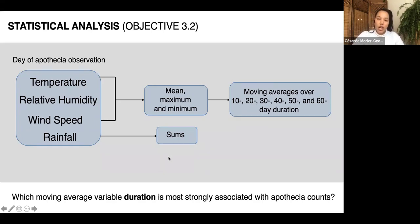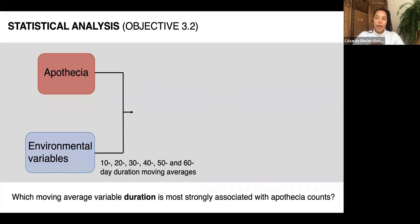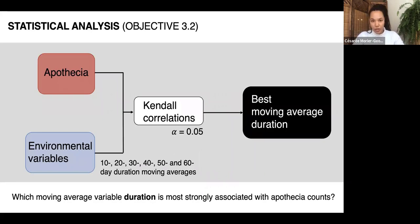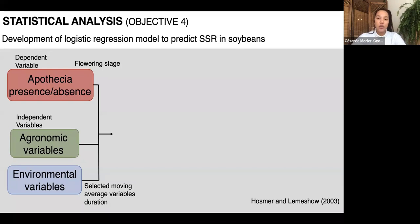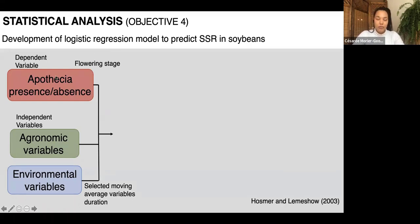For each day I observe apothecia in the field, I'll also accumulate the sum of rainfall to that point. My question is: which moving average duration is most strongly associated with apothecia presence? I'll identify that through correlation analysis. My last objective is to start developing a model to predict sclerotinia stem rot disease in soybeans in Quebec. Using agronomic and environmental variables as independent variables, I'll predict the presence or absence of apothecia during flowering — a binary dependent variable.